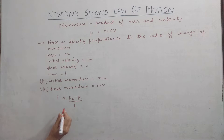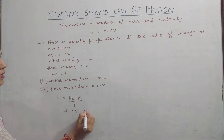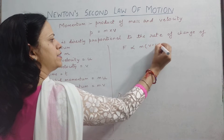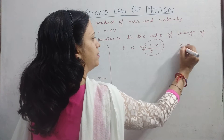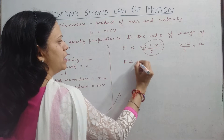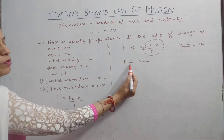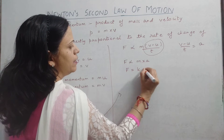Substituting the values: force is proportional to MV minus MU upon T. Taking M common, this becomes F proportional to M into (V minus U) upon T. We have already studied that (V minus U) upon T is acceleration. So F is proportional to M into A. To remove the proportionality sign, we add a constant K, giving F = K × M × A.